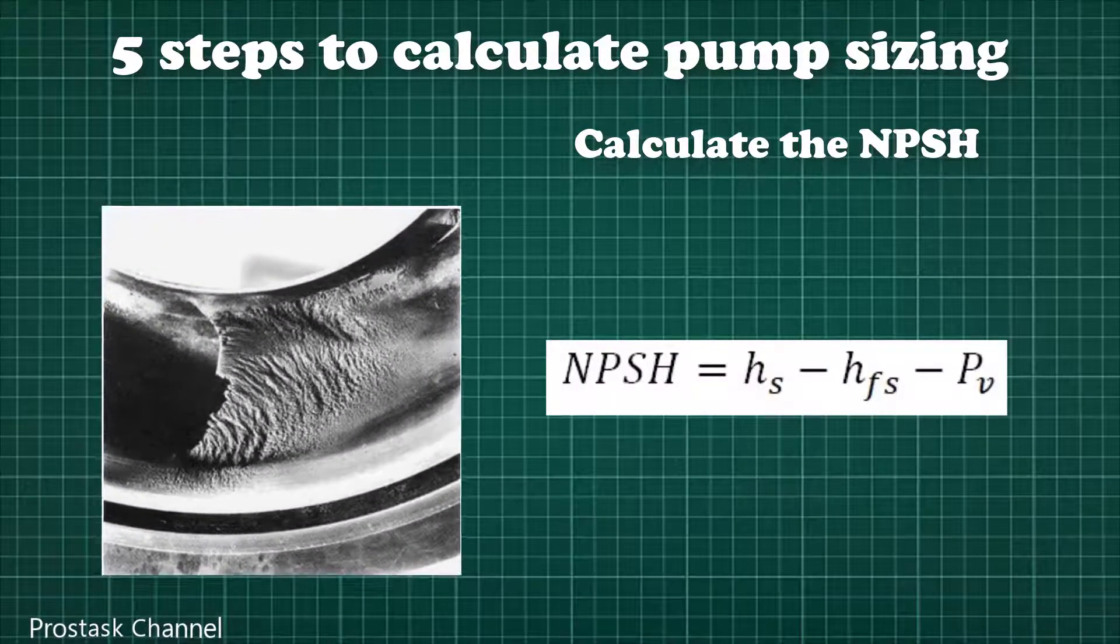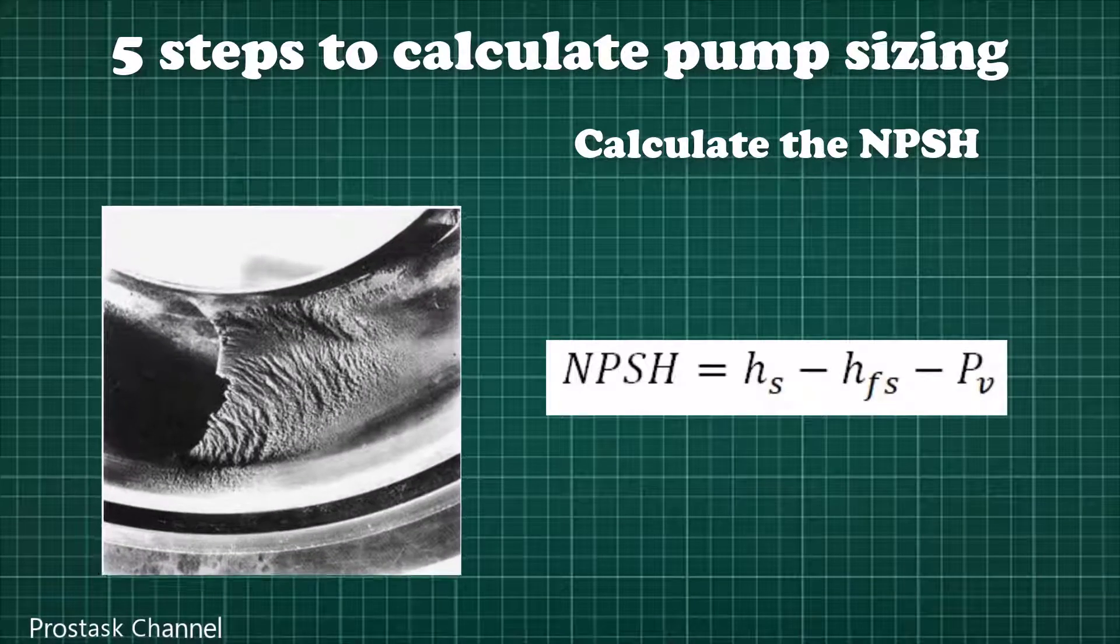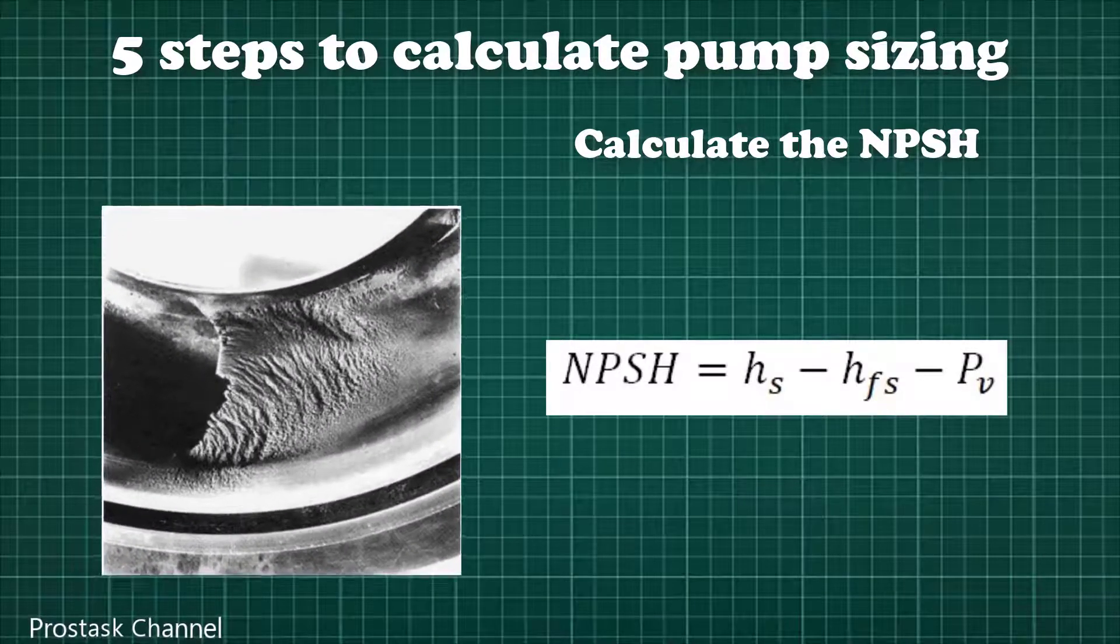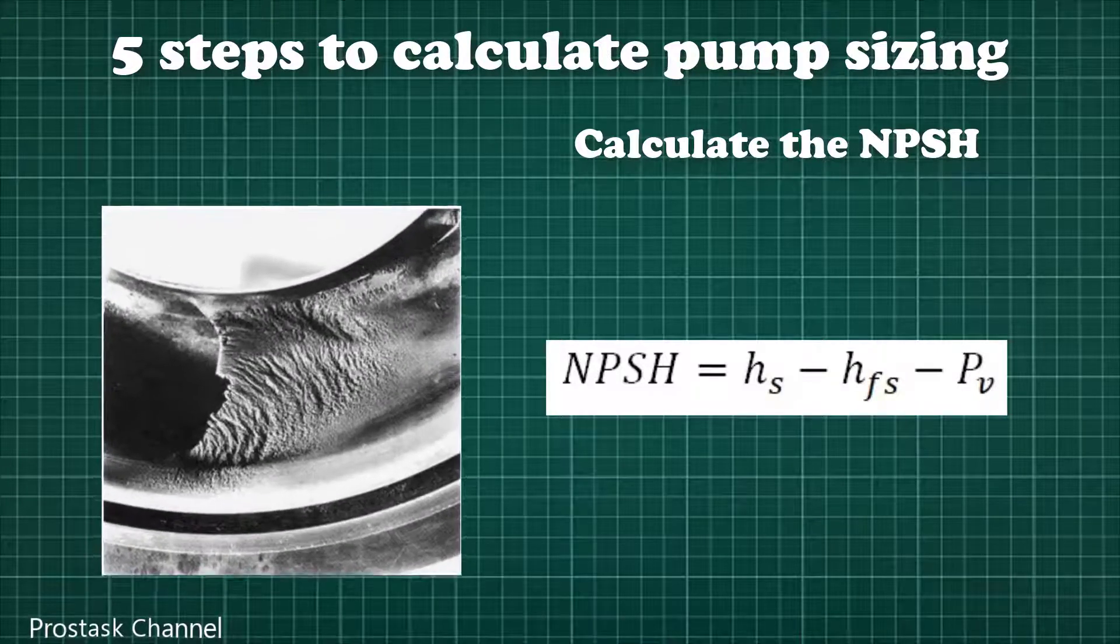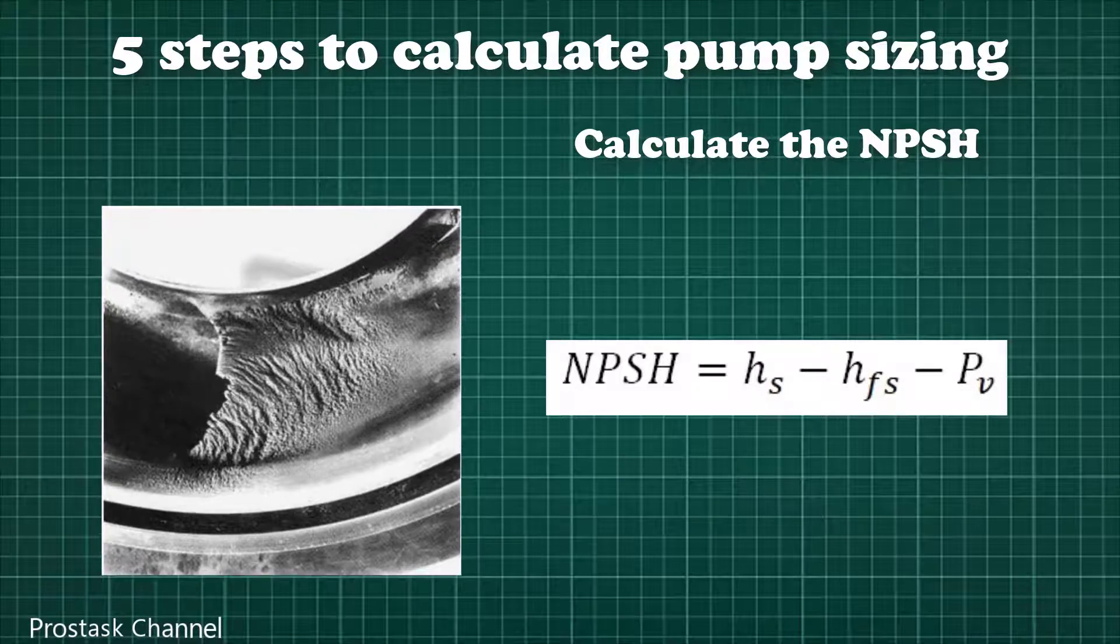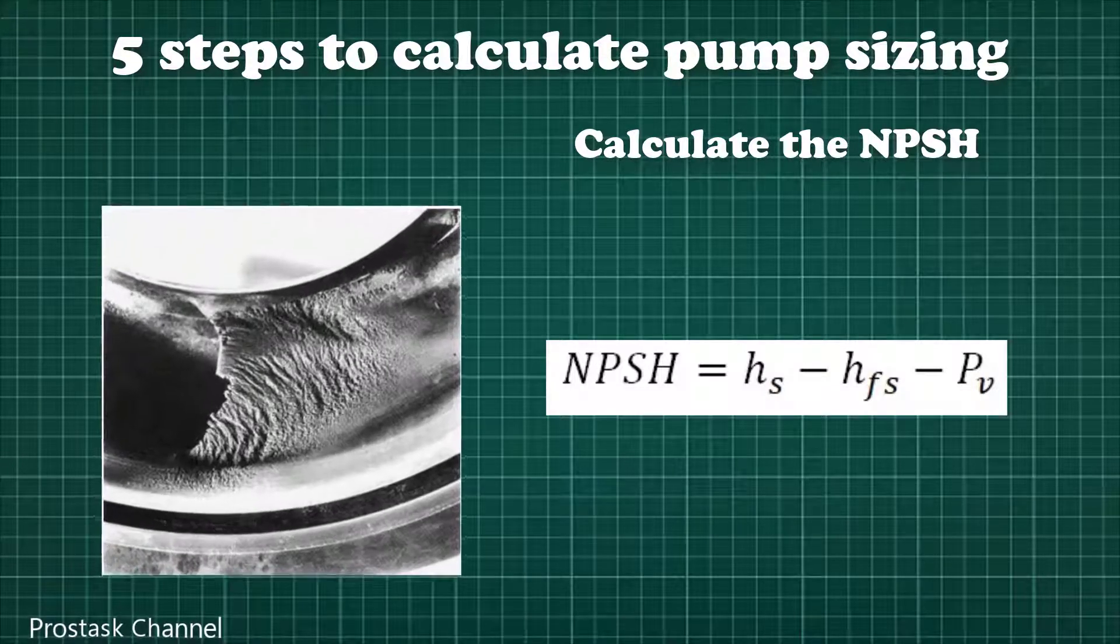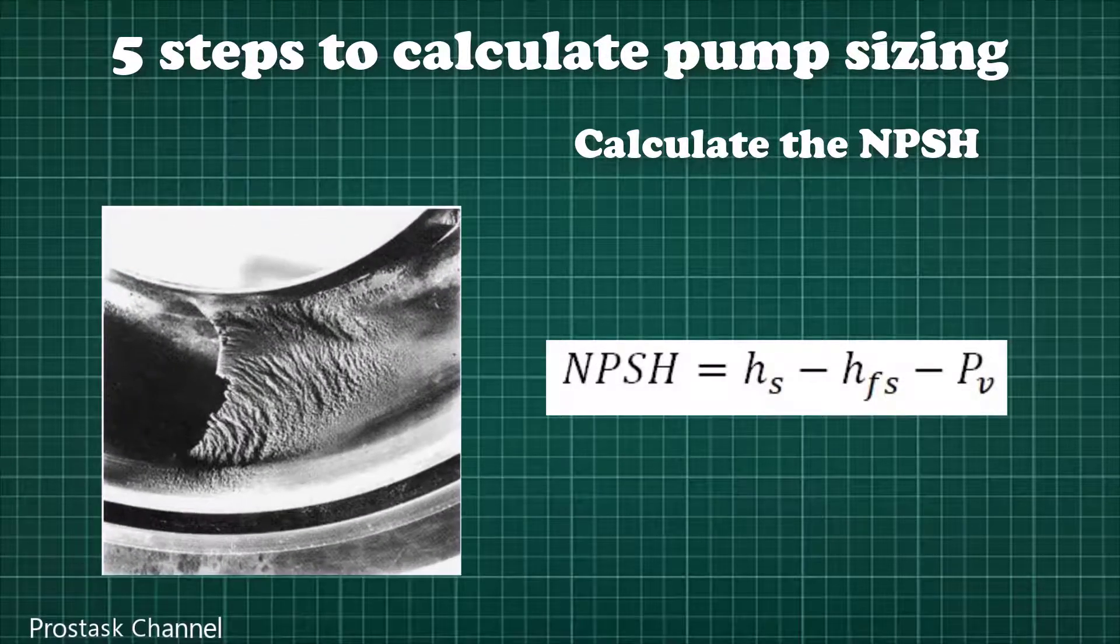The formula to calculate available NPSH can be calculated as follows. Where HS is suction head pressure in storage tank at low-low liquid level and lowest operating pressure, HFS is friction head loss of pump suction side, and PV is liquid vapor pressure at pumping temperature.